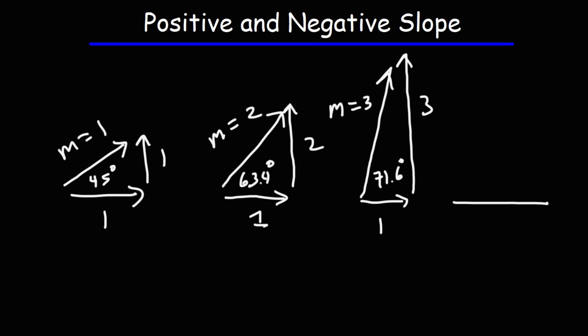If we travel two units to the right and only up one, the slope is 1 over 2. It's a half. The angle that corresponds to this is 26.6 degrees.